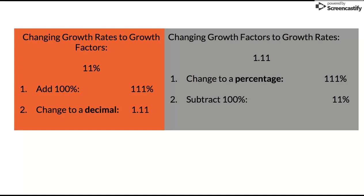Now to change growth factors to growth rates, let's say you have 1.11. To work backward, change this number to a percentage, move the decimal two spots to the right to get 111, and then subtract 100 percent to get 11 percent.